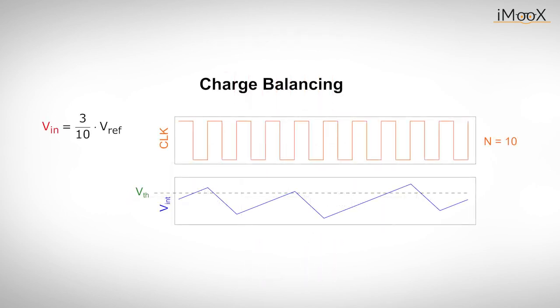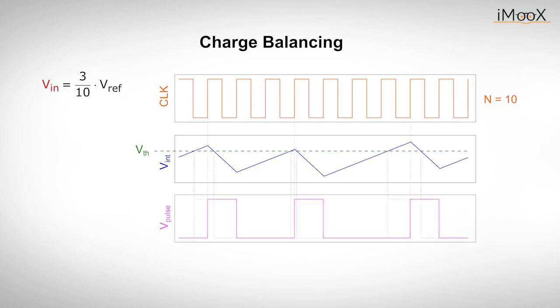In this picture, you can see 10 periods of a clock signal. The input voltage in this example is three tenths of the reference voltage. The input voltage is integrated and compared to a certain threshold voltage. Each time the threshold voltage is exceeded by the integrated signal, a pulse with a duration of one clock cycle is triggered at the output. Simply counting the number of pulses where the output is high and related to the total number of clock cycles gives a result proportional to the input voltage.